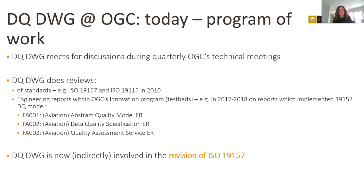How we work: we usually meet at quarterly OGC technical meetings, in person or online. Part of those meetings involves presentations and group discussions about selected aspects of data quality. We also commonly conduct reviews of existing standards. For instance, in 2010 the group reviewed both the metadata standard and the data quality standard. We also do internal reviews before engineering reports are published at OGC — those reports that relate directly to data quality or related aspects.